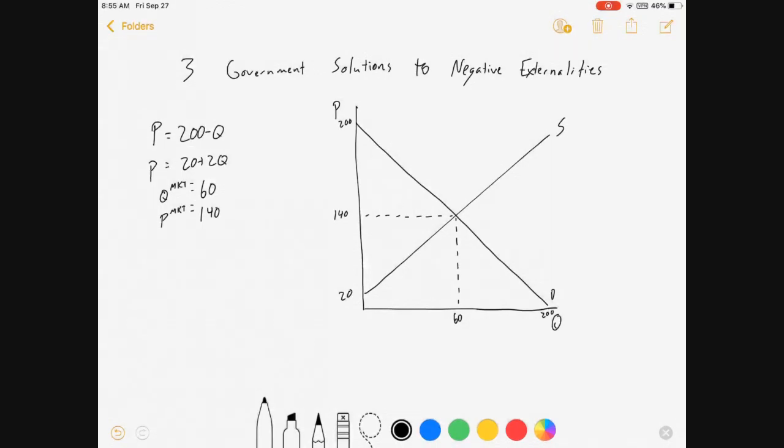So we're starting with this market, there's our demand curve and our supply curve, there's our equilibrium, it's all there, and I want to introduce an external cost into the market. I'm going to call my external cost EXC and I'm going to set it equal to $15.